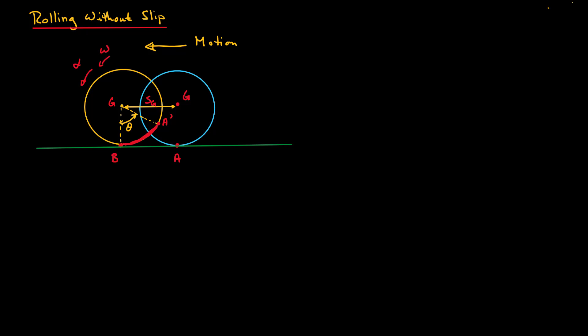Here we will consider the kinematics of objects rolling without slip. When we say that an object is rolling without slip, we are saying that there is no relative sliding motion between the point of contact on the object and the surface.